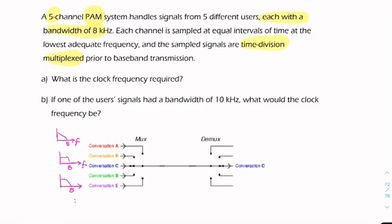So each of these will need to be sampled, and we're told that they're sampled at the lowest adequate frequency. And we know that that is the Nyquist rate.